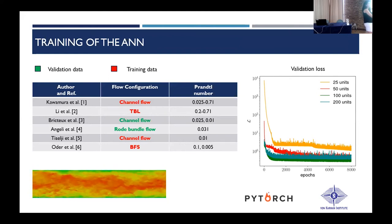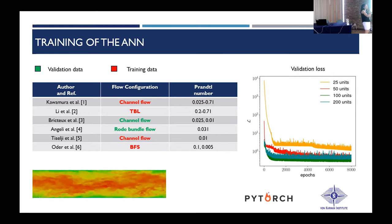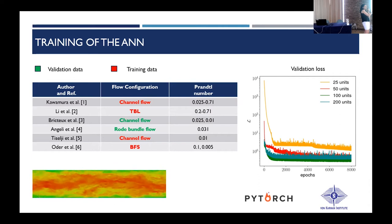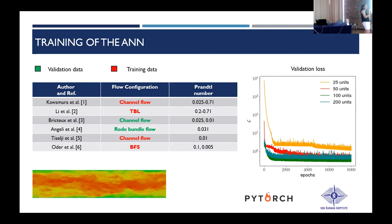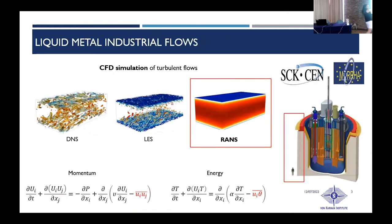Regarding the loss function: it was a combination of the mean square error of the heat flux minus the reference data, plus an additional term accounting for the difference between the spatial derivatives of the predicted heat flux and the reference spatial derivatives — because it was very important to preserve the smoothness of the field, since the energy equation contains the divergence of the heat flux, and oscillations in the prediction are problematic.